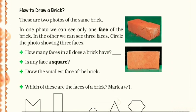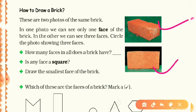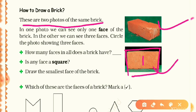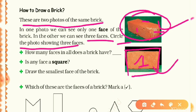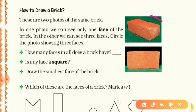On the next page, how to draw a brick. Here are some pictures of bricks. In one photo we can see only one face of the brick, and in the second one we can see two or three faces. Circle the photos showing three faces. Now, how many faces in all does a brick have? We can see three faces in the photo. Count the other faces — the fourth, the bottom side is the fifth, and the back side is the sixth. So finally, a brick has six faces.